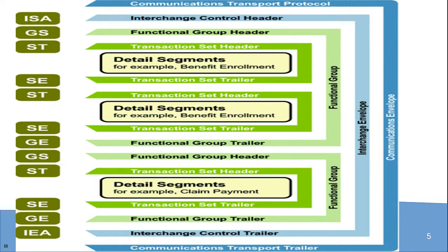GS starts from the functional group header and ends at the functional group trailer with GE. ST starts from the transaction set header and ends at the transaction set trailer with SE. These detail segments cover the full communication flow including transport and trailer components.